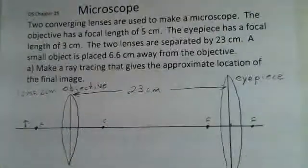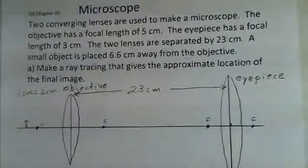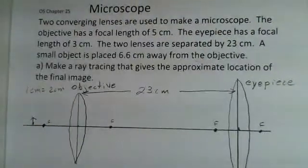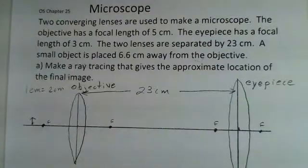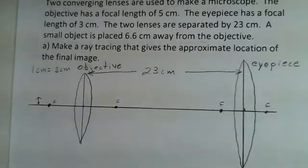Well, Professor Clements with you here as we talk about the optics of a microscope. In this situation we're going to have an objective with a focal length of five centimeters, the eyepiece focal length of three centimeters, and there's 23 centimeters separating the two lenses. We're going to put an object 6.6 centimeters away from the objective.